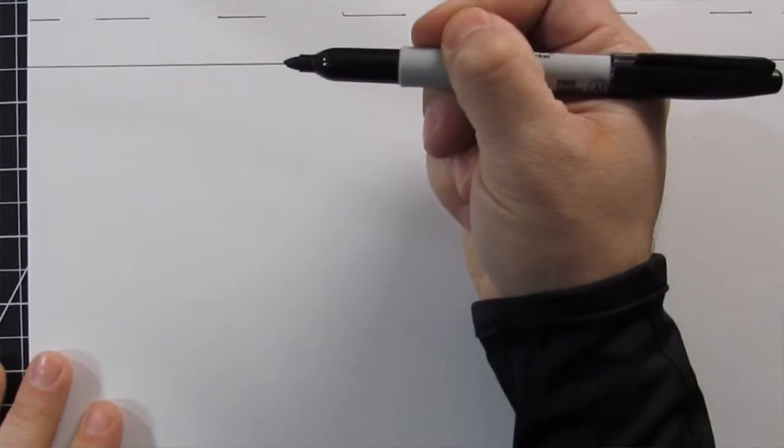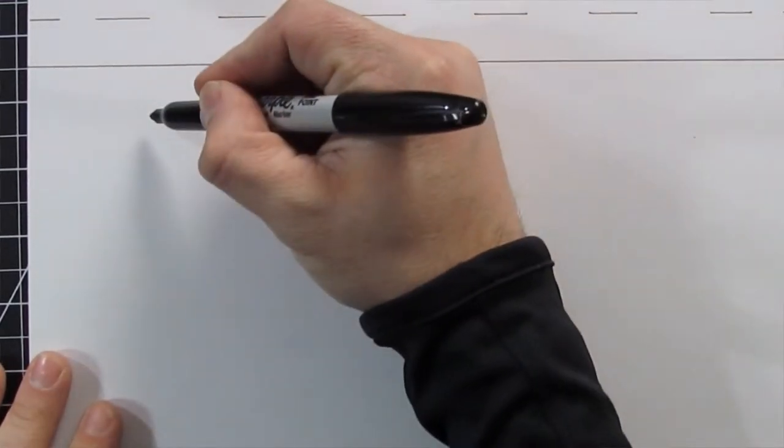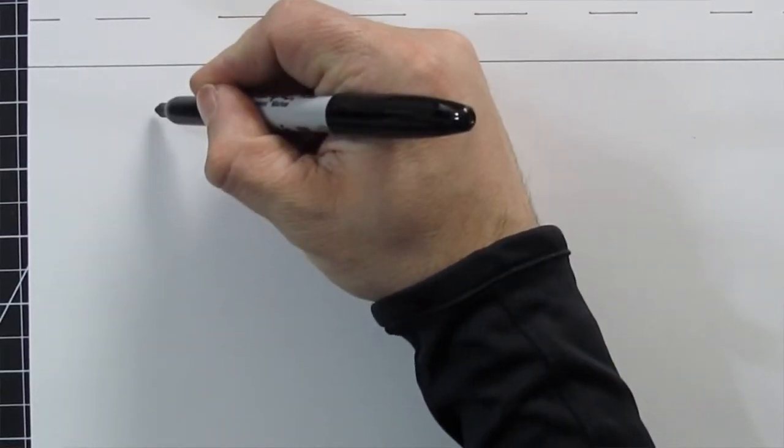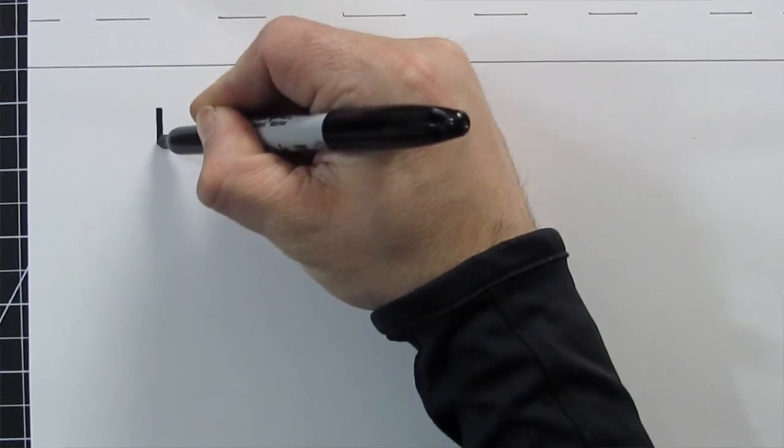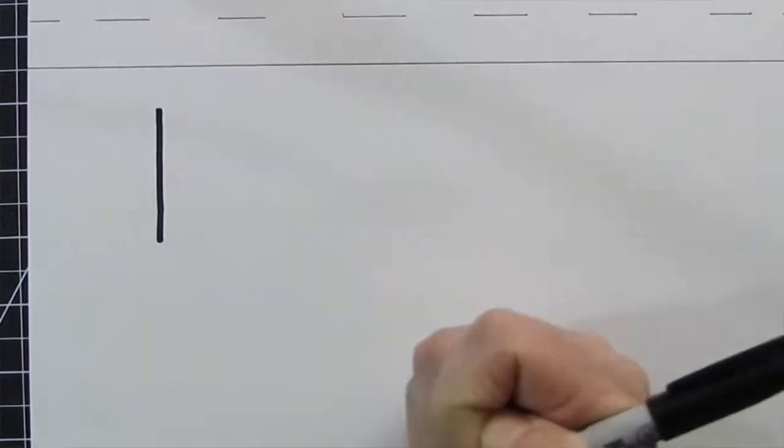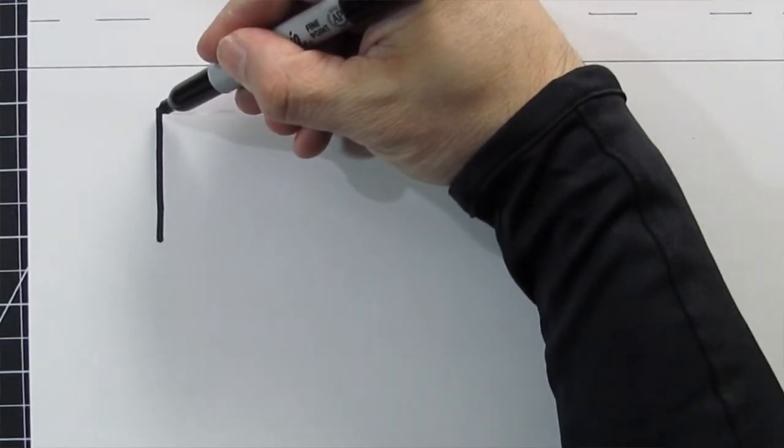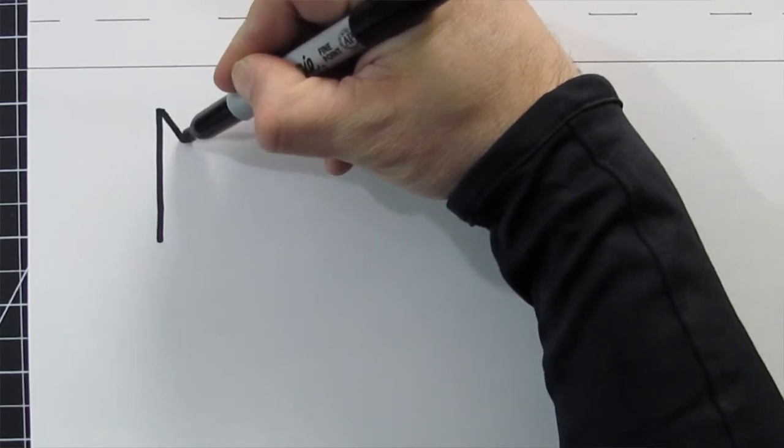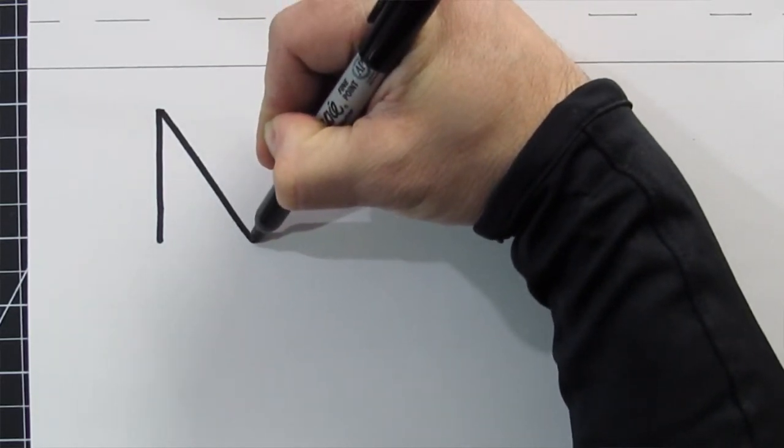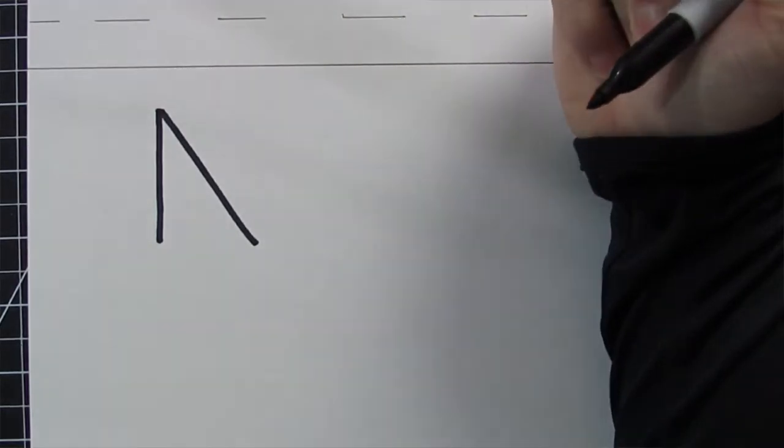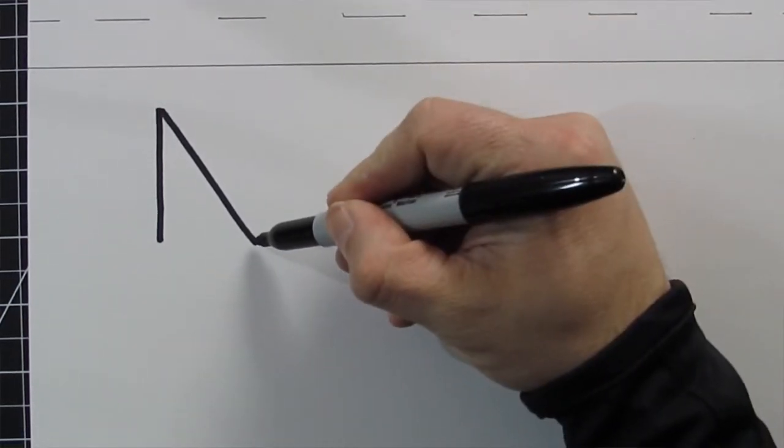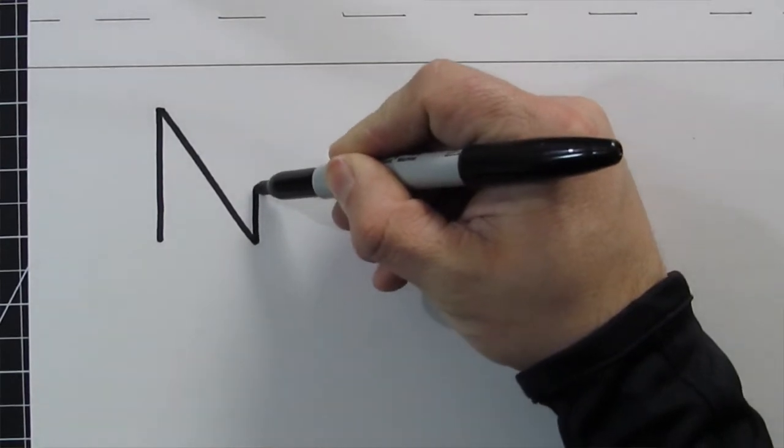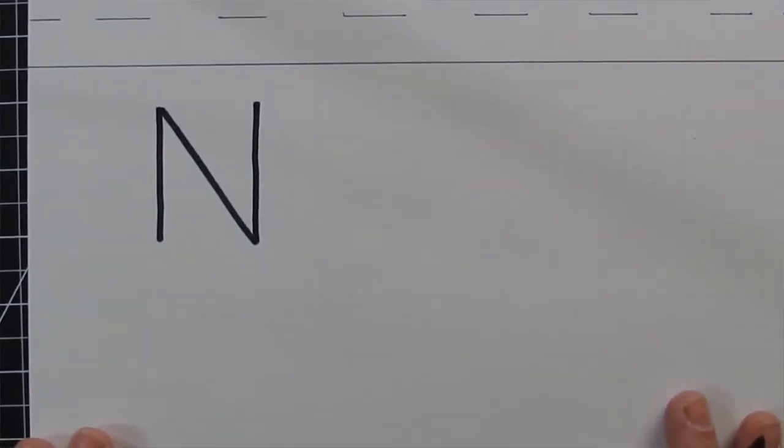First things first, get your pencil, find your point on the left side of the page, pick your point and we're gonna pull it straight down and stop. Then we'll go back up to the top and we're gonna slide down diagonally or a slanted line all the way to the bottom and stop. And then from there, that same point, we're gonna go straight back up to the top line. Pretty simple.